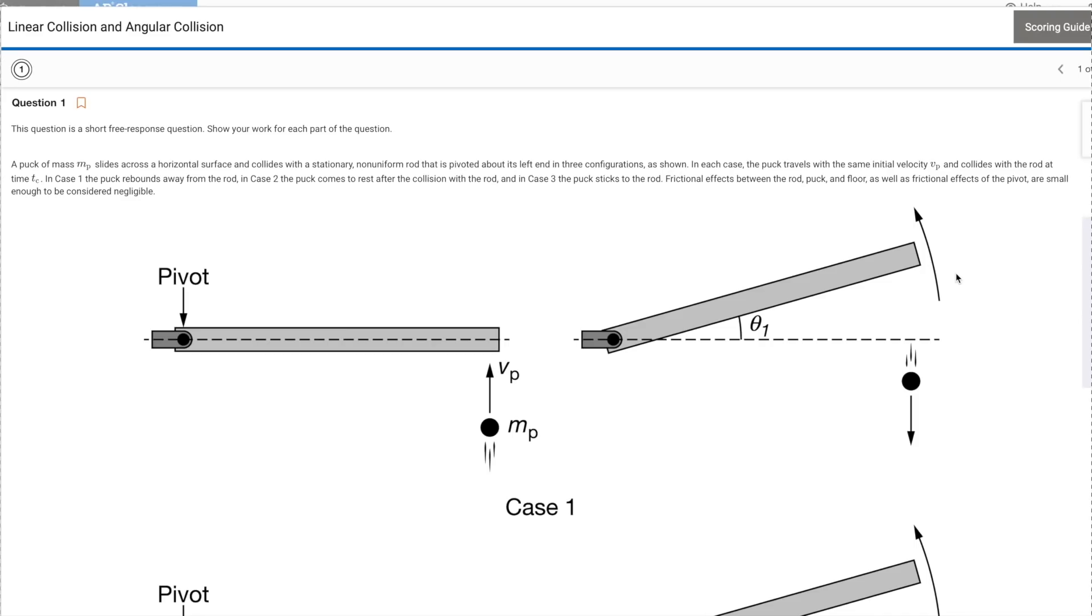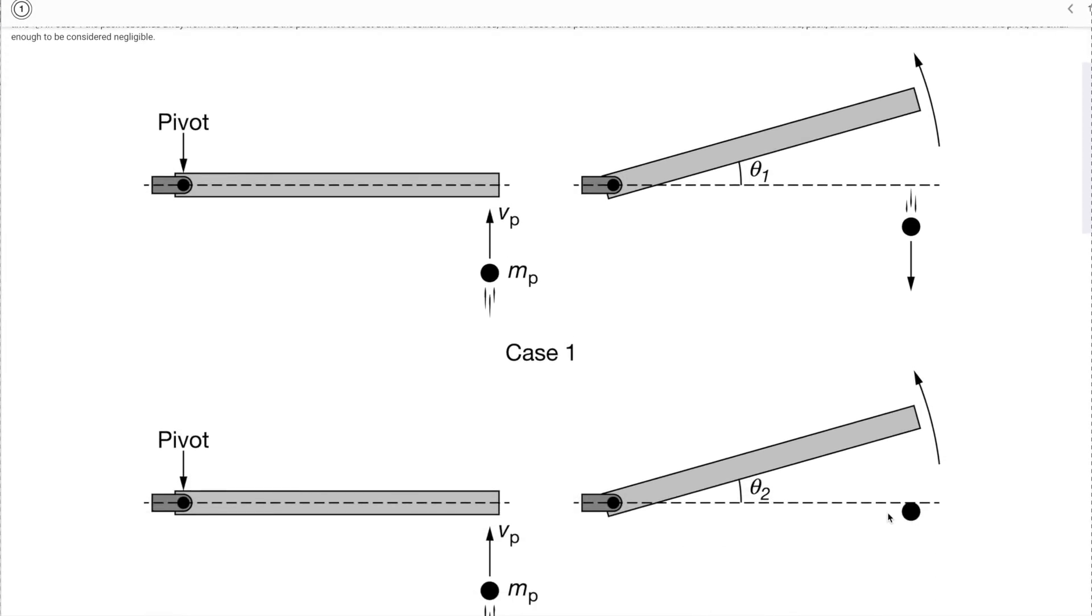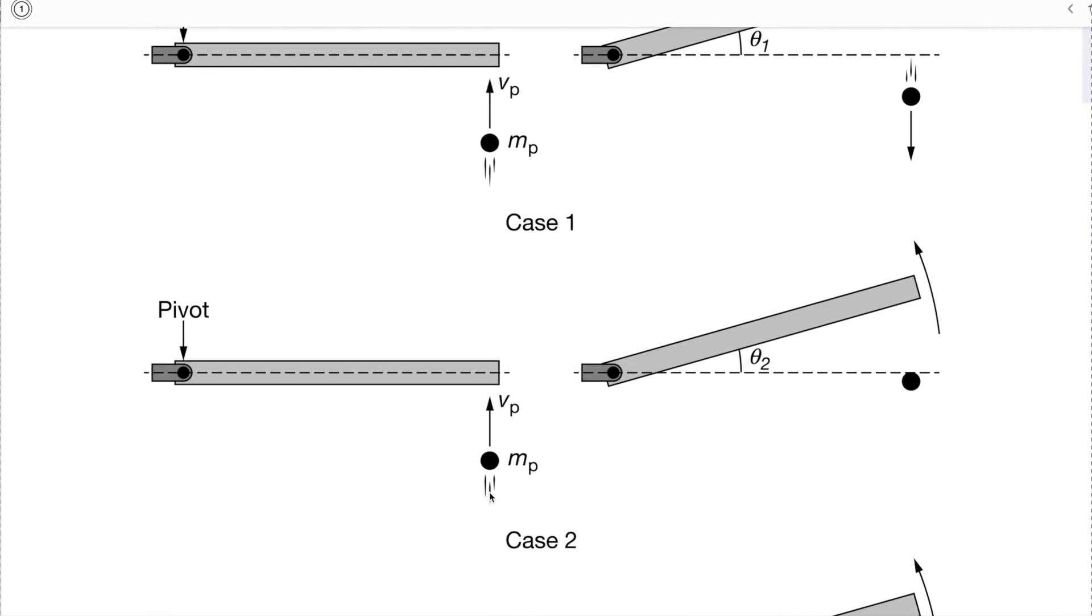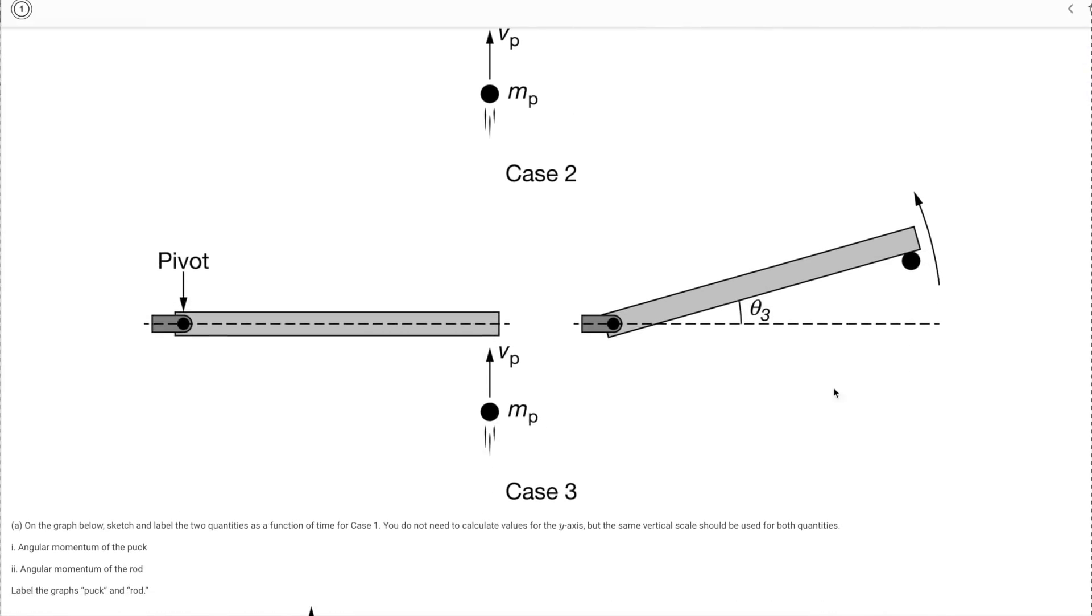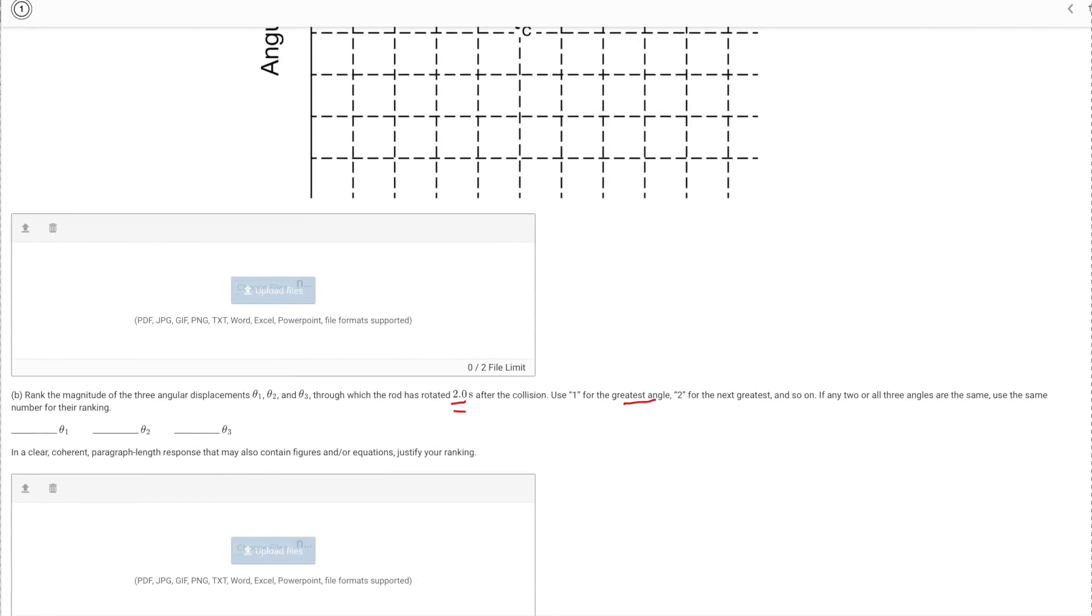Now just to recap, in case one the ball hits the rod and bounces back with some speed. In case two the ball hits the rod and stays put it does not move. And in case three it hits the rod stick to the rod and then continues on. So to answer this question we are going to have to look at the different momentums before and after for each case.